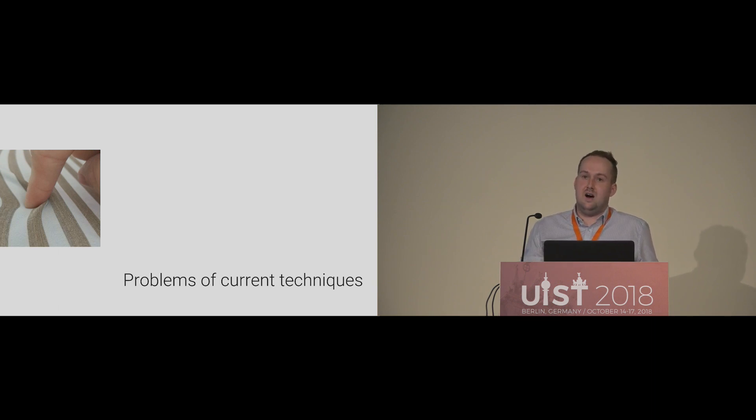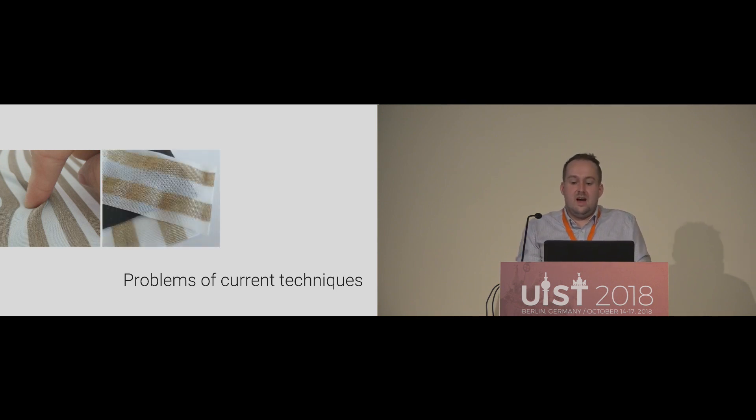One problem, for example, are wrinkles as seen in this figure, or alignment shifts which can happen when top and bottom electrodes are getting misplaced.